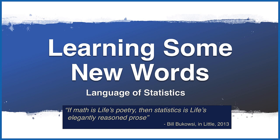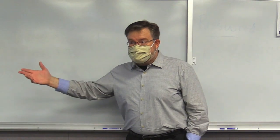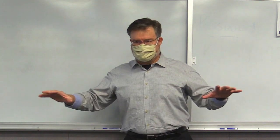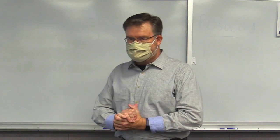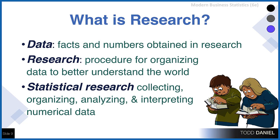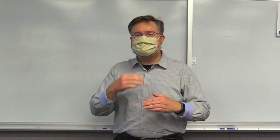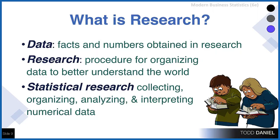Now I'm going to introduce you to some new ideas and topics. I know these are words you've heard before, but I want to combine them in a way you hadn't considered and give you the big picture. So I'll start with data. Data are facts and numbers obtained in research — they could be words, letters, or numbers. What we do with research is organize them, organize numbers in a way that we can tell stories with numbers. Research is that procedure — how we organize data. Statistical research has four aspects: collecting data, organizing data, analyzing the data, and interpreting the findings.